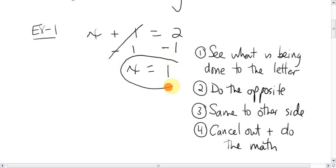So x is, like we thought it would be, 1. What we did in the last step there is we cancelled out. And then on the other side, we just did the math. It was 2 minus 1, which is 1. Done.